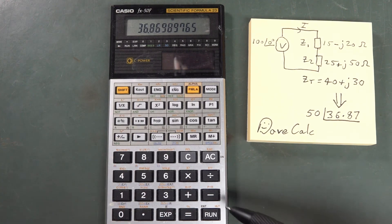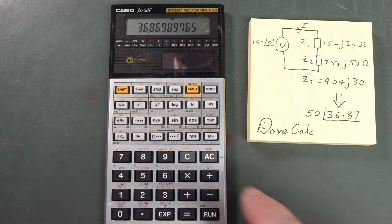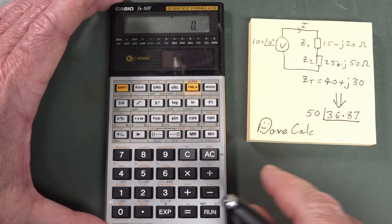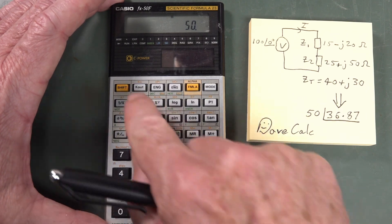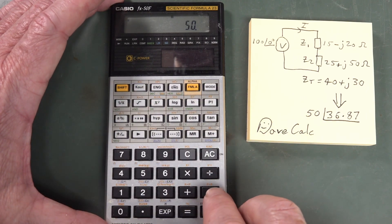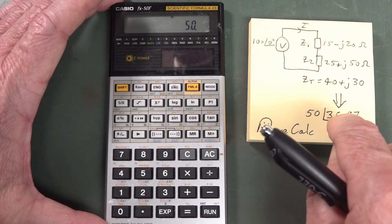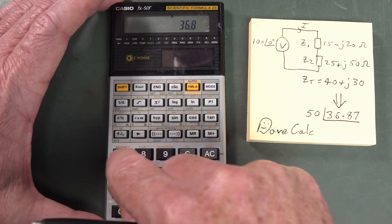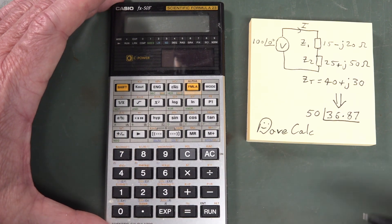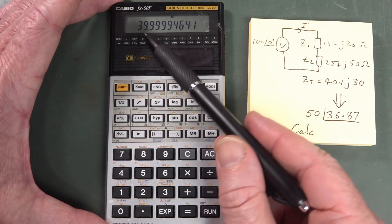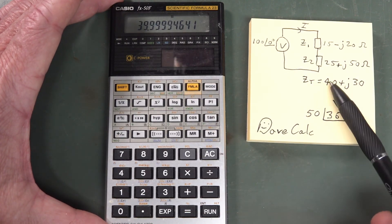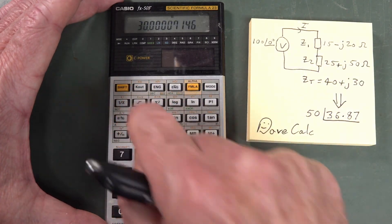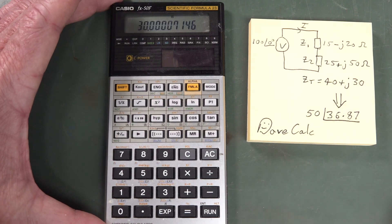Easy peasy! And if you want to convert polar form to rectangular form, you do exactly the same thing. You put in the real component first — 50 — then do shift polar to rectangular, P to R, and then put in our angular component, 36.87. Press enter and bingo. It's rounded a little bit because we rounded the number, but it's 40. And then the Y register will contain our imaginary part — it's 30.